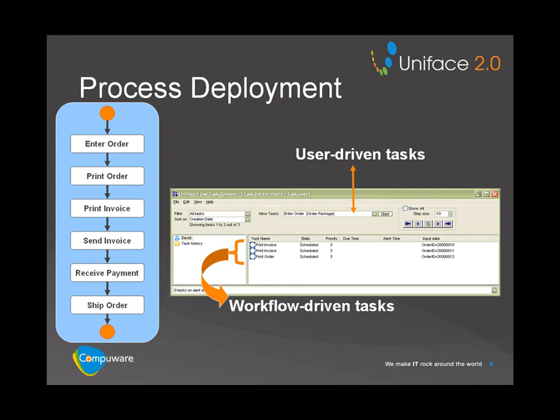If required, you can also make changes to the deployed business process model using the Process Console. The Process Console enables you to create different versions of the same business process. Process model versions are stored in the Deployment Workflow Repository. This database also stores the runtime data about individual process instances used and created by the Business Process Server. The Business Process Server schedules new tasks. To execute batch tasks, the Task Server is required. The Remote Message Server enables remote business processes to integrate with each other using B2B messaging. UnifaceFlow also provides APIs that enable external applications to integrate with UnifaceFlow and enable you to develop a tailor-made task console.